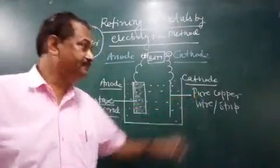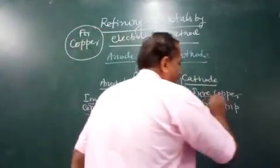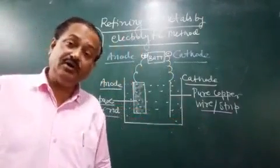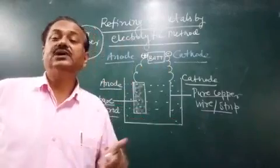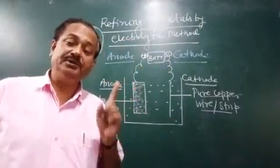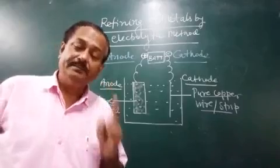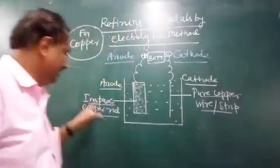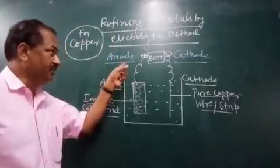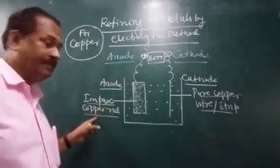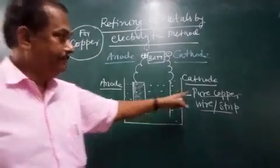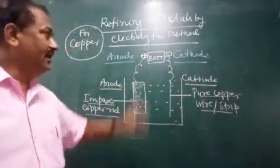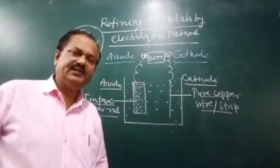A pure metal strip of the same metal is taken as the cathode. Suppose we have taken copper — a pure copper strip is taken. Why pure? Because we have to purify; it must be 99.9% pure. So the pure metal is made cathode, that is negative.